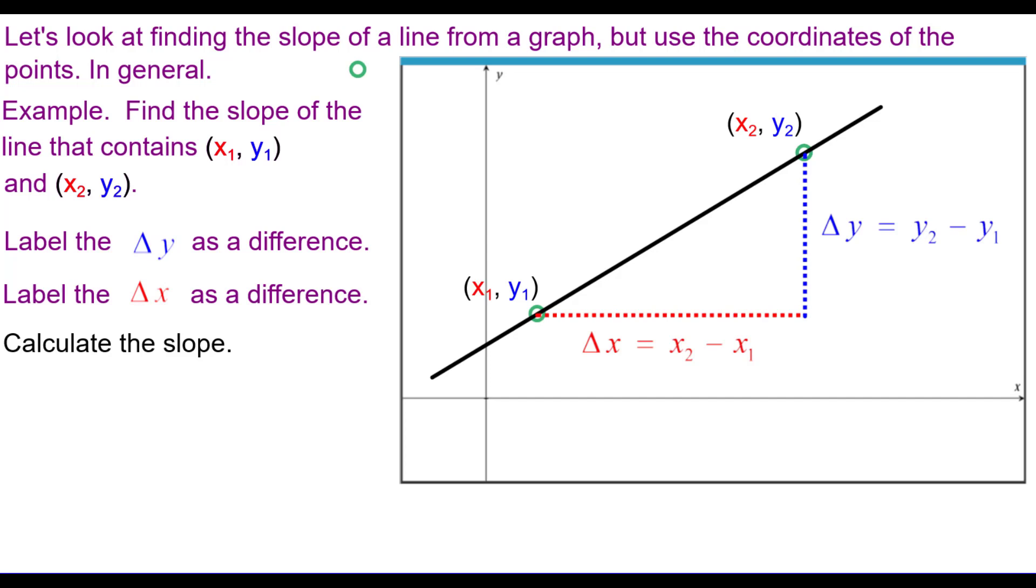Calculate the slope as we did before. Change in y over change in x, which will be y sub 2 minus y sub 1 over x sub 2 minus x sub 1.